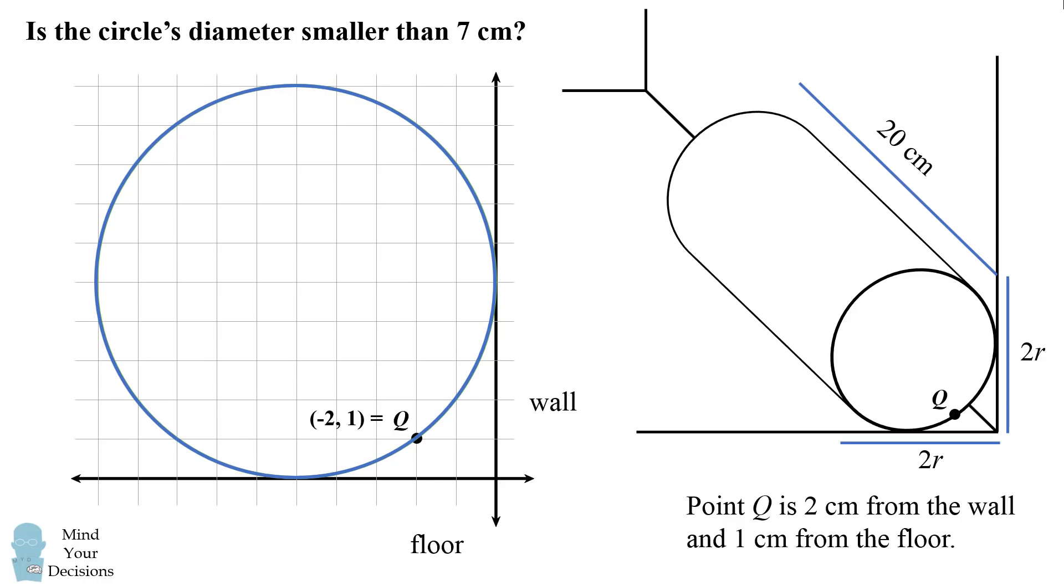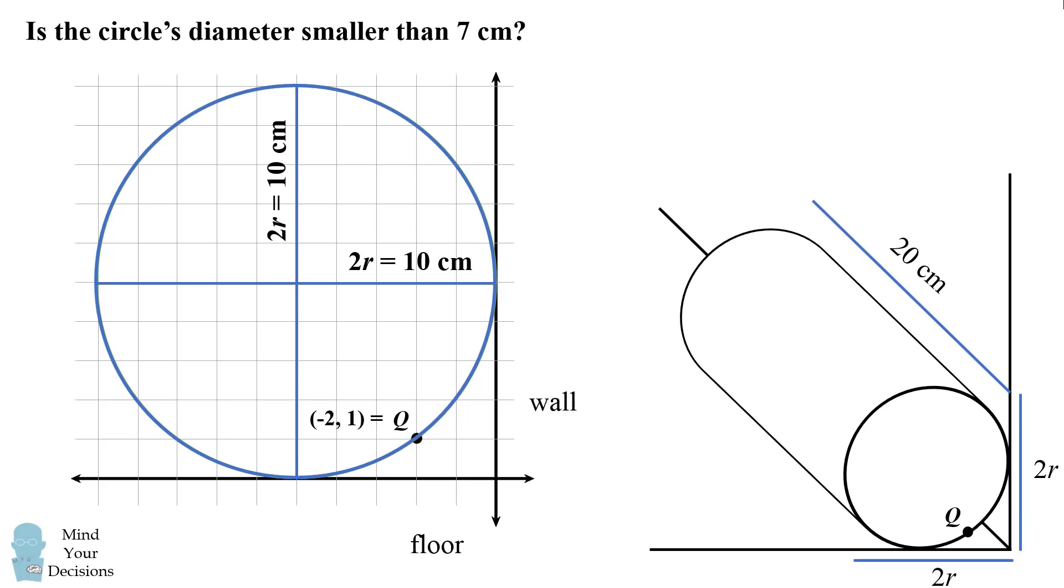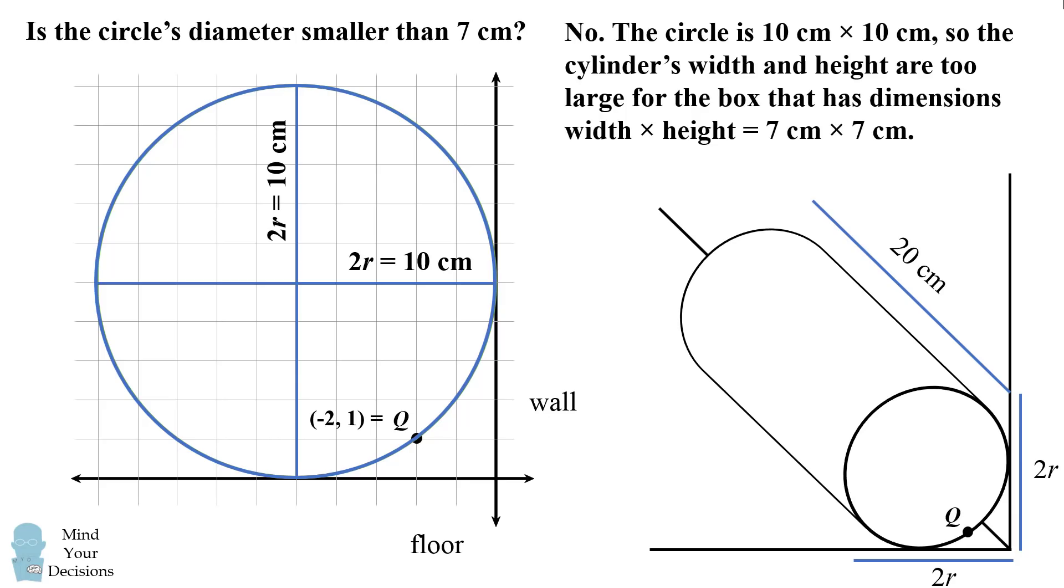We can now measure the circle's dimensions by counting the units on this plot. The width will be equal to 10 units, or 10 centimeters, and the height will be also 10 centimeters. So if all we cared about was solving this problem numerically, we've figured it out. The circle is not smaller than 7 centimeters in its diameter. The circle is 10 centimeters by 10 centimeters. So the circle's width and height are too large for the box that has dimensions of 7 centimeters by 7 centimeters. So in one way, we found the answer.